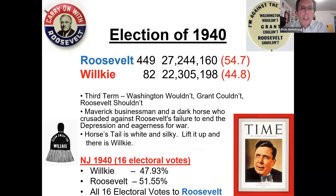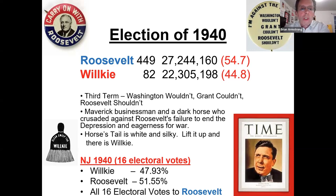The third term was a big issue for the 1940 election. Wendell Willkie ran against Roosevelt. The sentiment was 'Washington wouldn't, Grant couldn't, Roosevelt shouldn't' — nobody should run for a third term. But Roosevelt said he had more to do and defeated Willkie. Fascinatingly, after Willkie lost, Roosevelt hired him as an advisor. Willkie had been a moderate business outsider to the party. My dad taught me a little ditty: 'A horse's tail is white and silky, lifted up and there is Willkie.' New Jersey went soundly for Roosevelt.